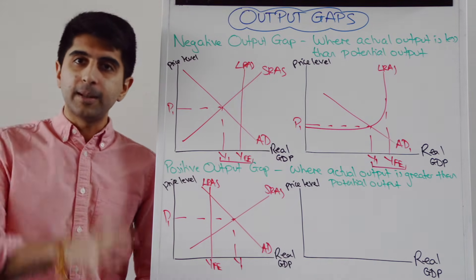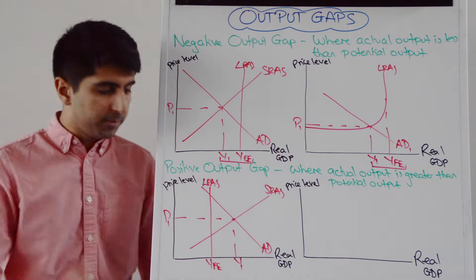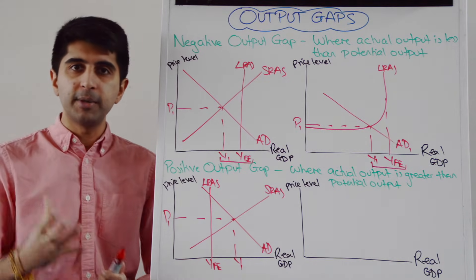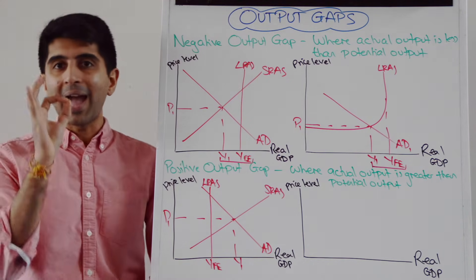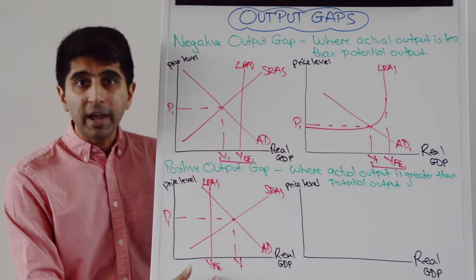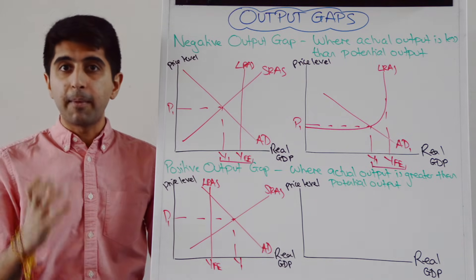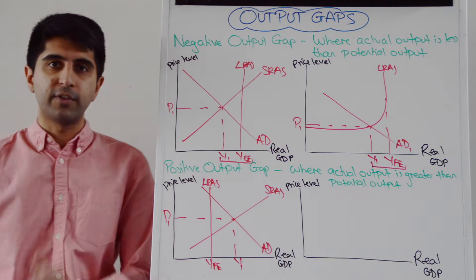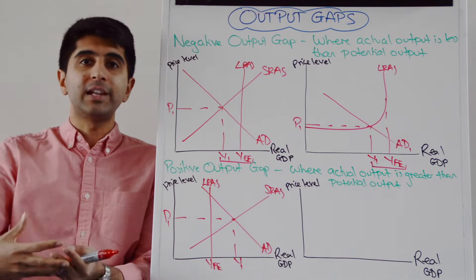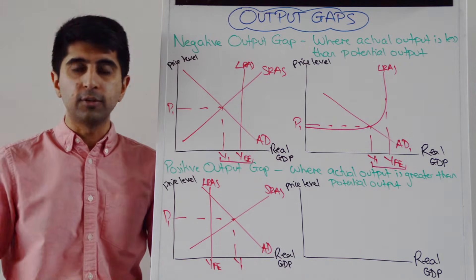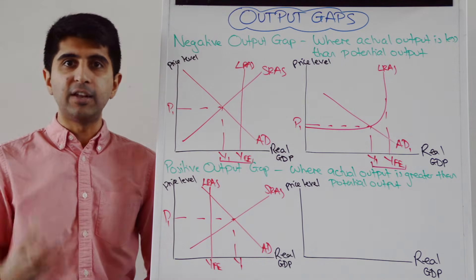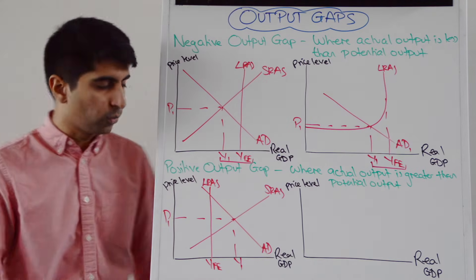How is that possible? Well, remember what we said in previous videos — it is possible for a short period of time for the economy to be producing beyond the full employment level of output, because YFE represents the maximum level of output using all factors of production at sustainable levels. To produce Y1, maybe we are taking workers out of the natural rate of unemployment — overusing labour, unsustainable use of labour, maybe overusing capital, unsustainable use of capital. The end result will be an overheating economy with probably very high inflation. Hence the term inflationary gap is used as well as a positive output gap.